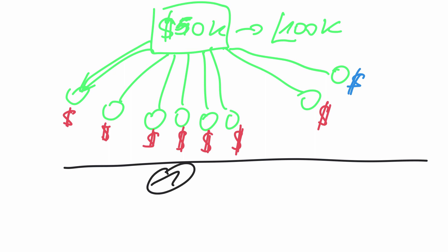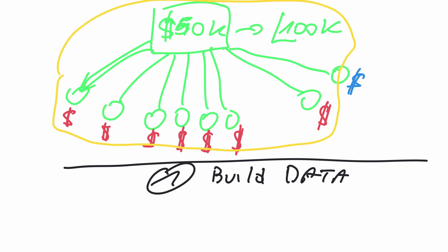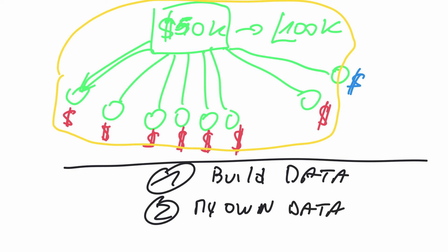So that was step number one: build the data. The only problem with this is that all this data doesn't belong to me — I cannot use it for my own campaigns. My ultimate goal had always been: how do I get my own data? Because once I have my own data, this is where I can make serious money.